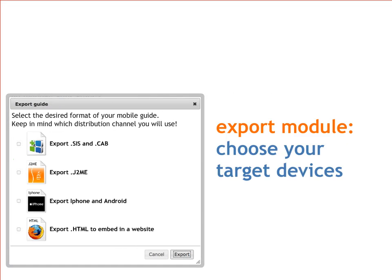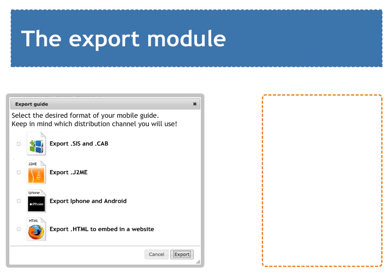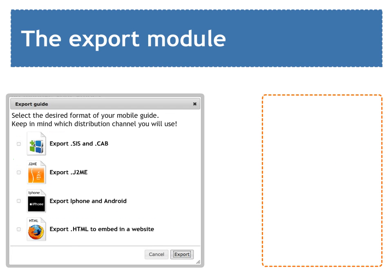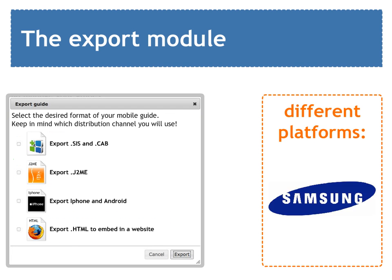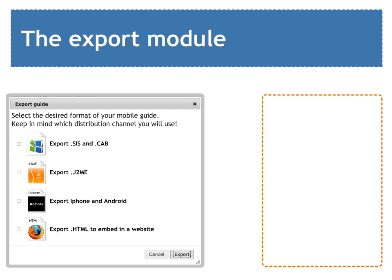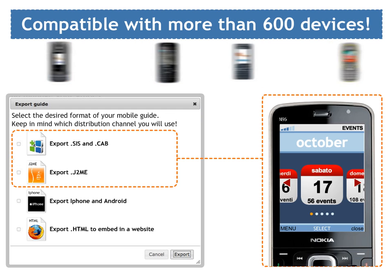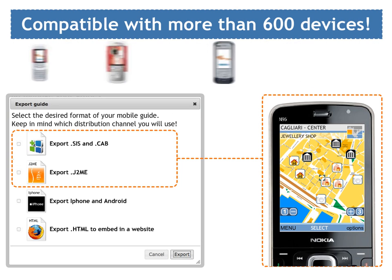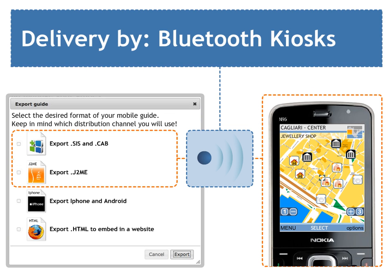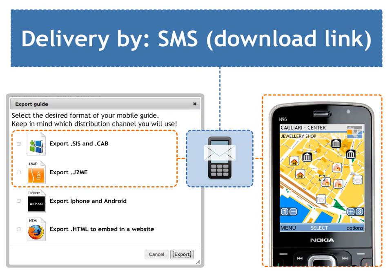The export module is an easy to use but incredibly powerful tool. It allows you to create different kinds of applications for different platforms that can be distributed through different channels. You can choose to export a standalone offline application, compatible with more than 600 devices, that can be delivered to your customers through Bluetooth kiosks, pre-installed on microSD memories, or via SMS.